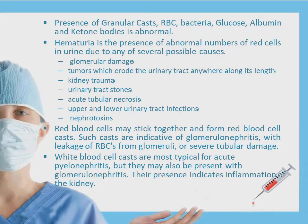Hematuria is the presence of an abnormal number of red cells in the urine due to any of several possible causes: glomerular damage, kidney trauma, upper and lower urinary tract infection, or nephrotoxins. Red blood cells may stick together and form red blood cell casts; such casts are indicative of glomerulonephritis with leakage of red blood cells from the glomerulus or severe tubular damage. White blood cell casts are most typical for acute pyelonephritis, but may also be present with glomerulonephritis, and their presence indicates inflammation of the kidney.